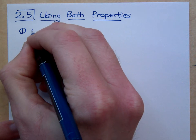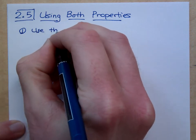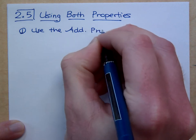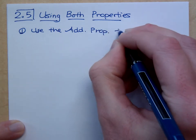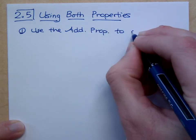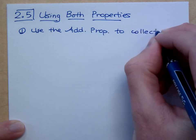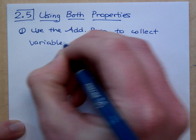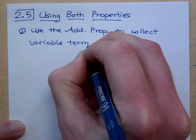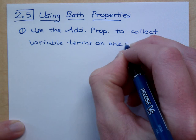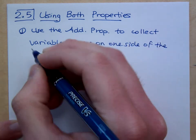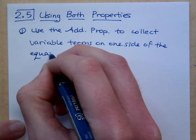The first step is to use the addition property to collect variable terms on one side. You want to collect variable terms on one side of the equation, and you also want to get your constants on the other side.